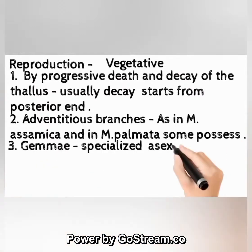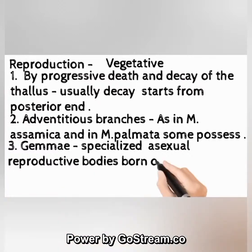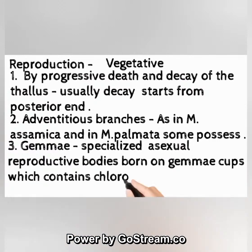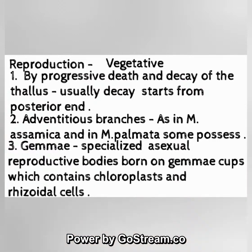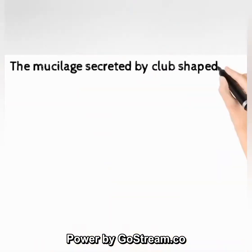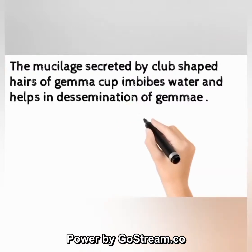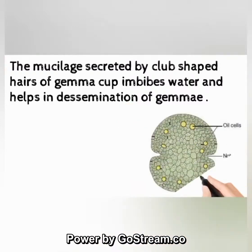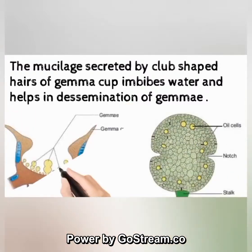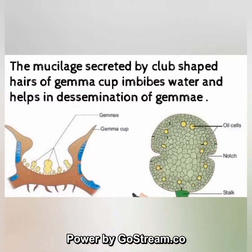Some species possess gemmae — specialized asexual reproductive bodies borne on gemma cups — which contain chloroplasts and rhizoidal cells. The mucilage secreted by club-shaped hairs of the gemma cup imbibes water and helps in dissemination of gemmae. A diagram of a gemma is shown here.